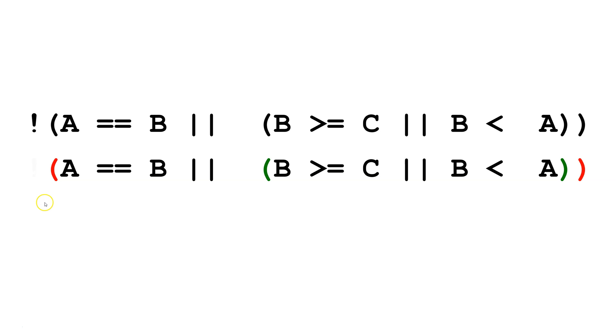We'll start by getting rid of the NOT. Now, we're going to reverse A equals B to A is not equal to B. We'll reverse the OR to an AND and then this inner parentheses, we'll just put a NOT in front of it.